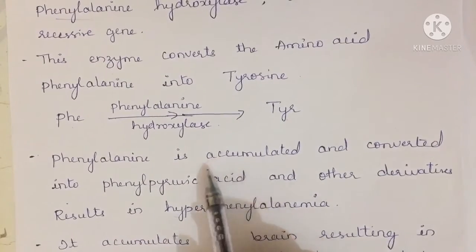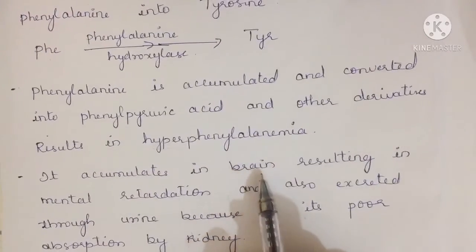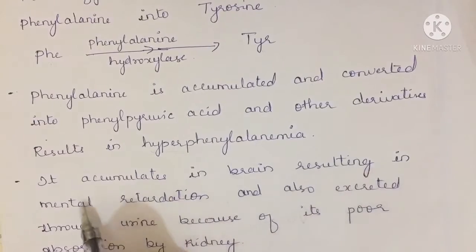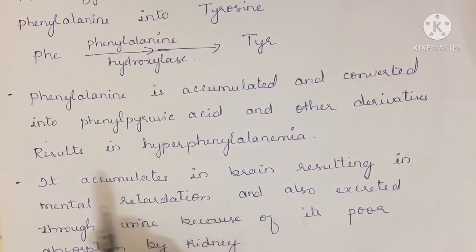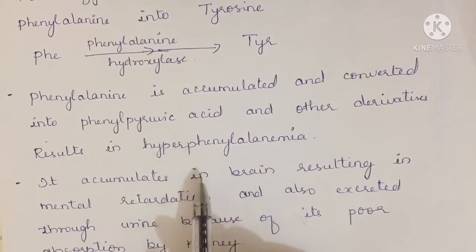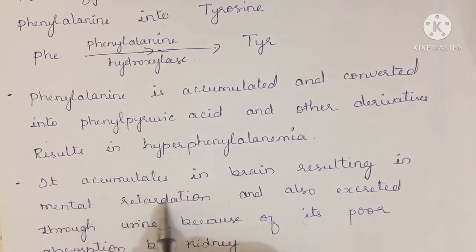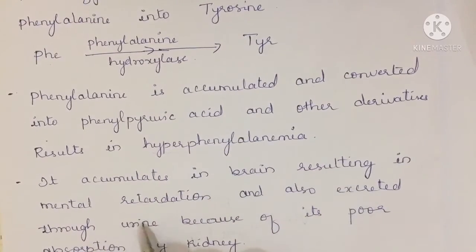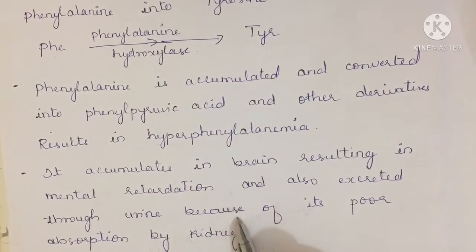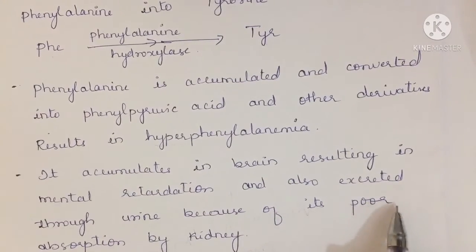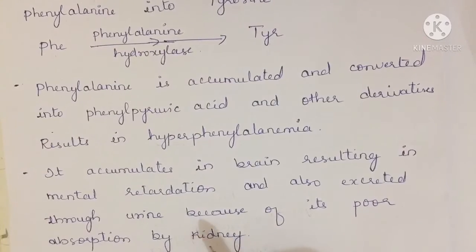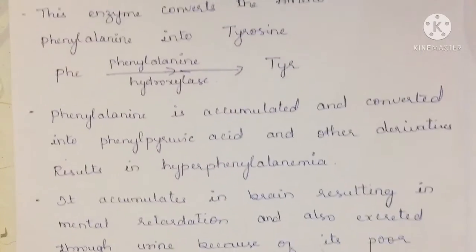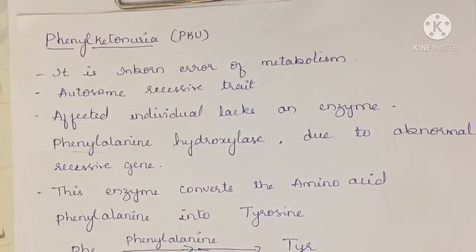Phenylalanine accumulates in the brain, resulting in mental retardation — meaning the patient is mentally unstable and unable to make normal decisions. Additionally, phenylalanine is excreted through urine due to its poor absorption by the kidney. Since the kidney cannot absorb phenylalanine properly, it releases it through urine. This is a brief and easy summary of the information related to phenylketonuria.